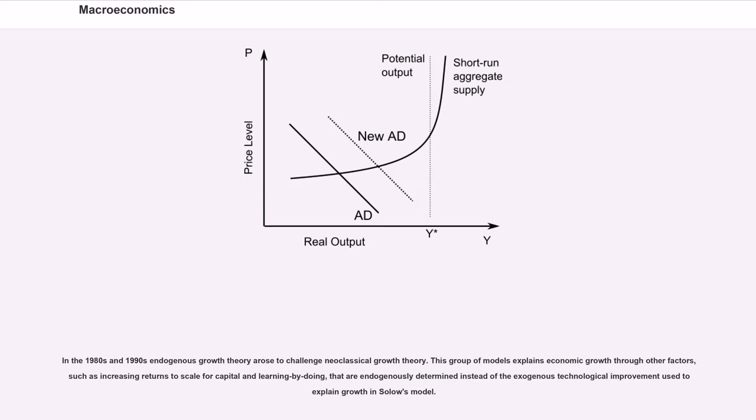In the 1980s and 1990s endogenous growth theory arose to challenge neoclassical growth theory. This group of models explains economic growth through other factors, such as increasing returns to scale for capital and learning by doing, that are endogenously determined instead of the exogenous technological improvement used to explain growth in Solow's model.